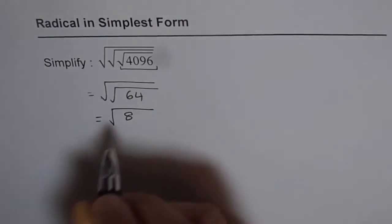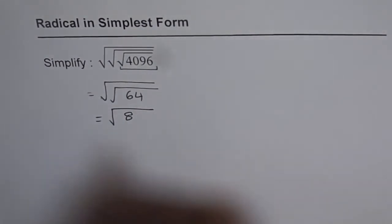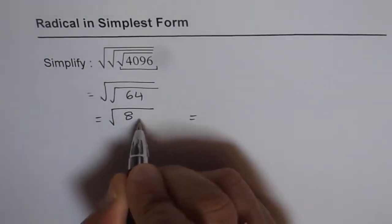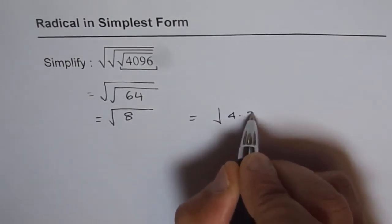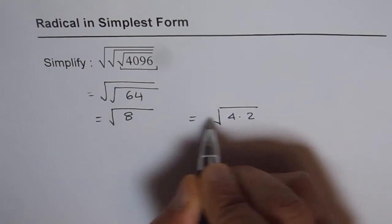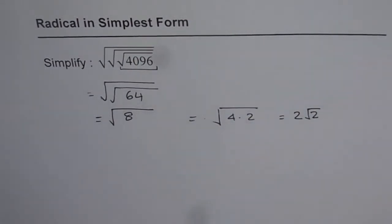And again you can use your calculator and find square root of 8 to get the answer. At this stage you can also write 8 as perfect squares, 4 times 2 is 8. So square root of 4 is 2 and you get 2 square root of 2. So that is the answer for the given question.